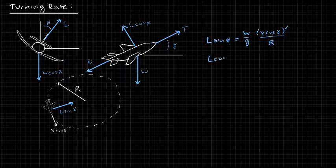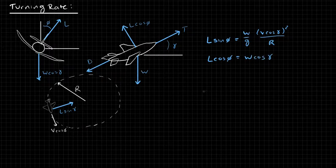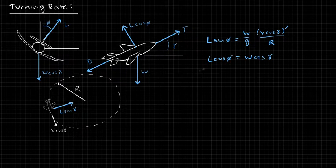We also had that L cos phi equals W cos gamma. And so with these two equations, we can do something kind of interesting, and that's to solve for R a different way than what we did before.